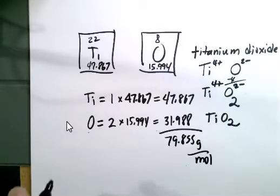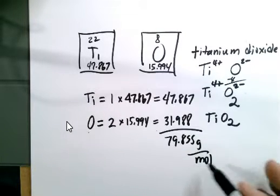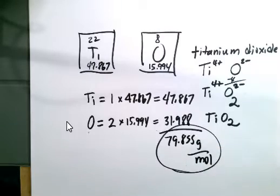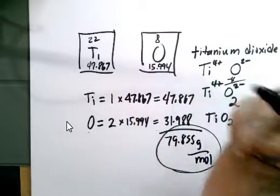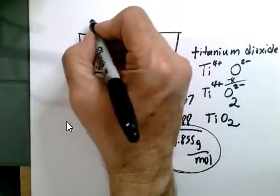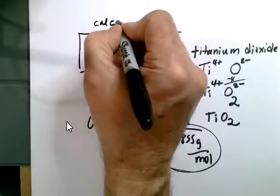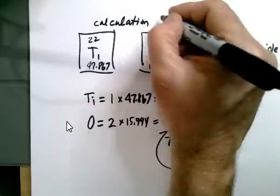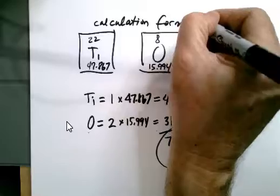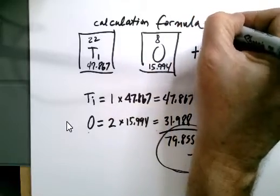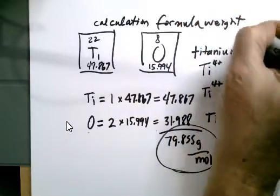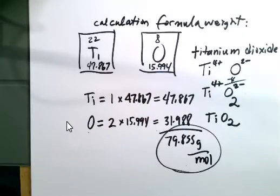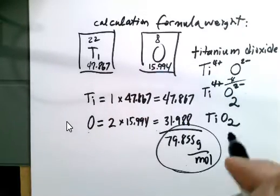So that is the molar mass, which we could round to 80 grams per mole. Let's circle that answer. We could call this calculating formula weight, molar mass, or formula mass. There are lots of different ways to say this.